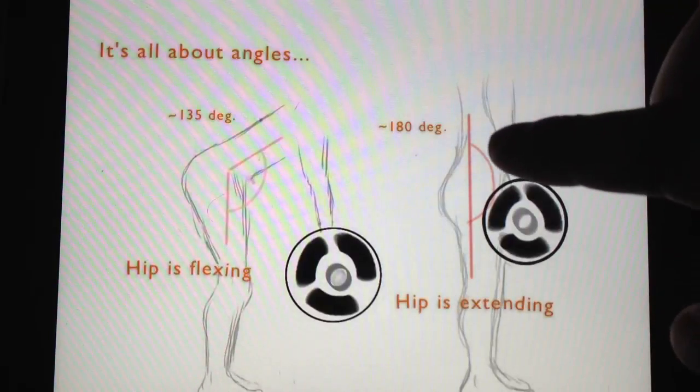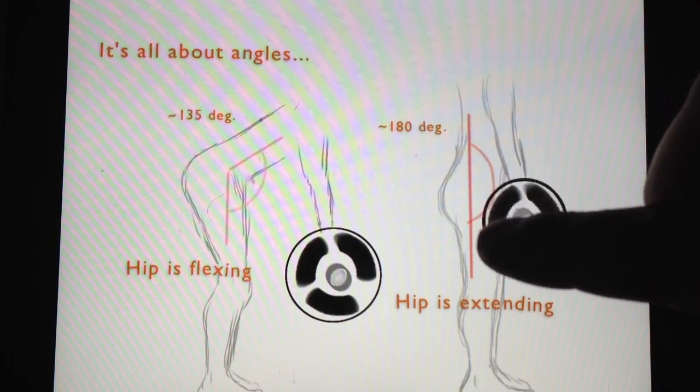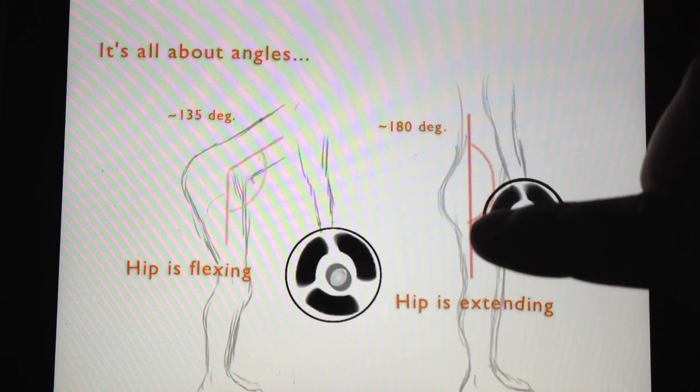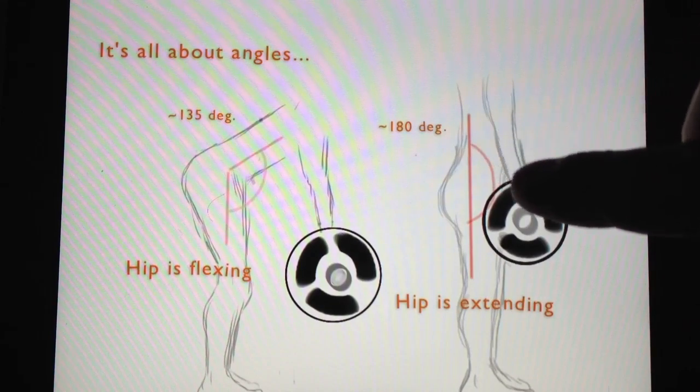They would start in an extended position, the hip extension, because the angle here would be large, 180 degrees. You can think of it as a straight line running up and down the torso with the kind of half circle here.